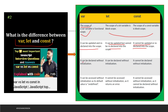The third difference is that var can be declared without initialization because the default value is undefined. When it comes to let, it can also be declared without initialization. The fourth difference is var can be accessed without initialization as its default value is undefined. In case of let, it cannot be accessed without initialization as it returns an error. And in case of const, it cannot be accessed without initialization as it cannot be declared without initialization. So these are the major differences between var, let and const.